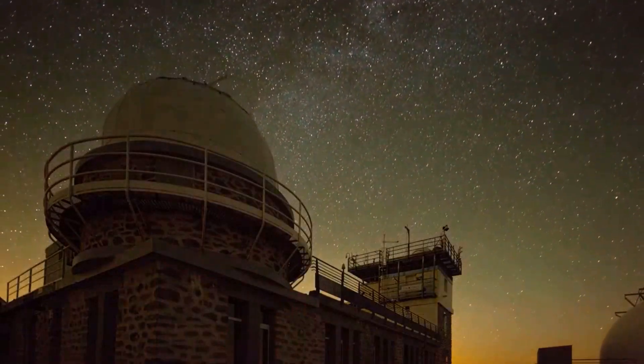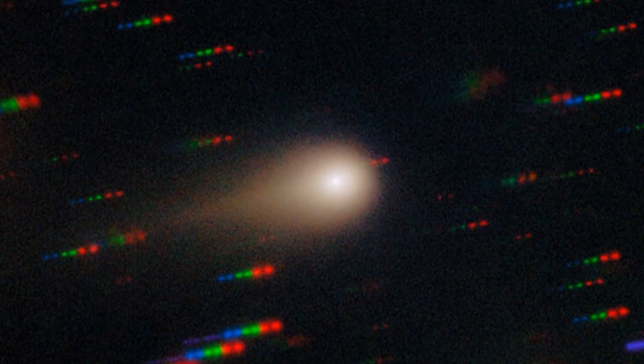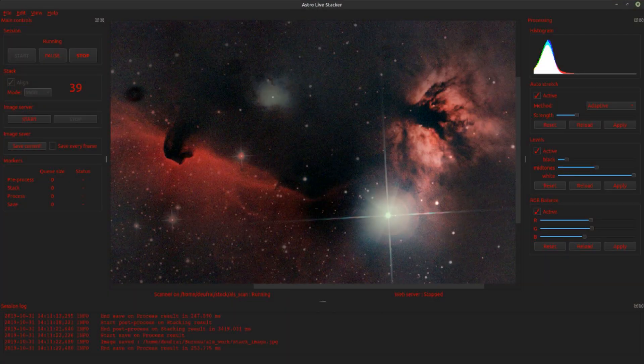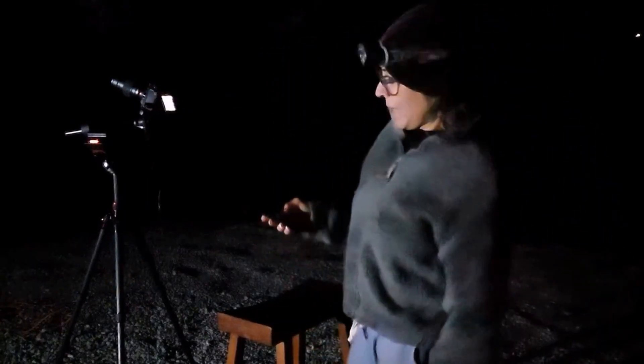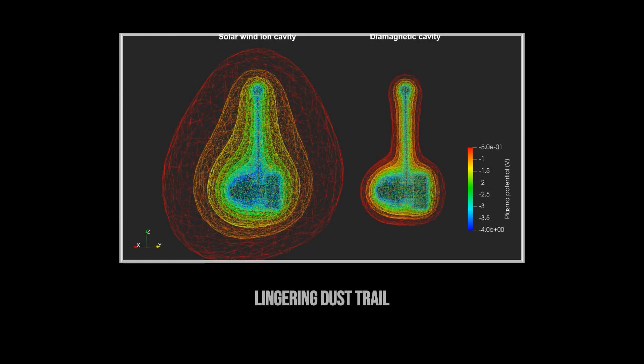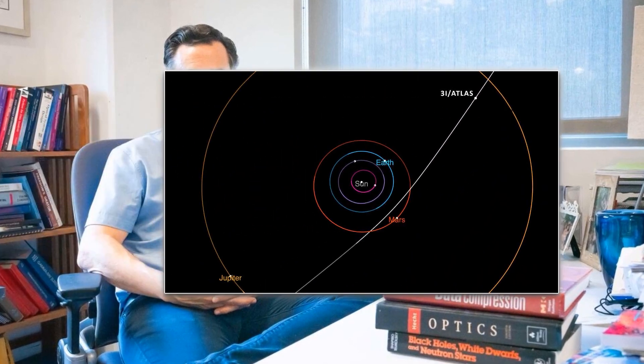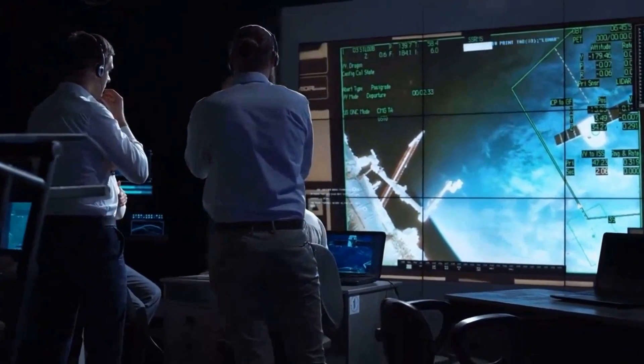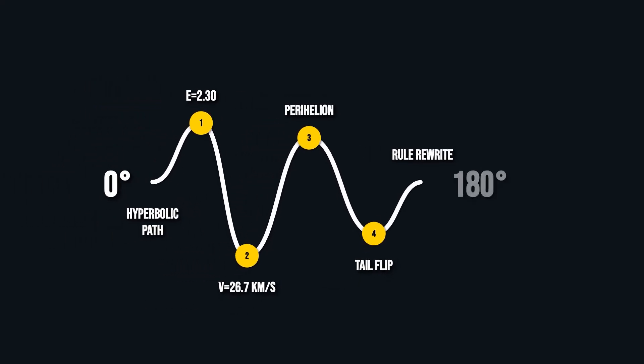Something unexpected is happening in the latest images. Instead of a classic tail streaming away from the sun, a faint streamer appears to point directly back toward it, a sunward anti-tail. This isn't an illusion from camera tricks or stacking artifacts. Multiple amateur astronomers using different telescopes and filters are reporting the same odd geometry. Plasma models suggest that dust grains, larger and slower to react to solar wind, can linger along the comet's orbital plane, creating this reversed effect when viewed from Earth's perspective. For many, it's a visual puzzle that defies what textbooks promise. The mechanics behind this anti-tail are still being debated, but every new image adds to the sense that 3I/Atlas is rewriting the rules of comet behavior.